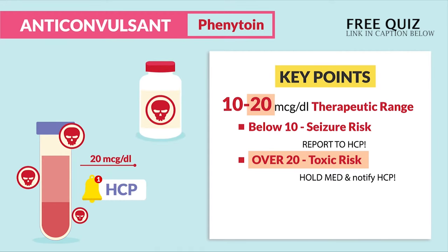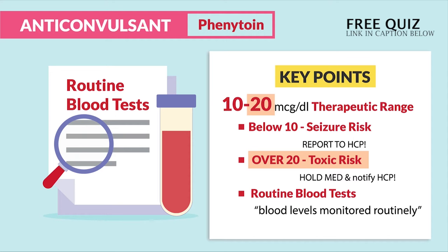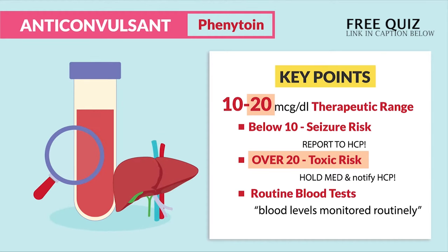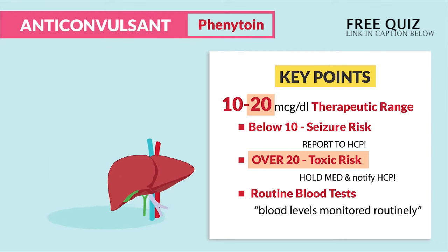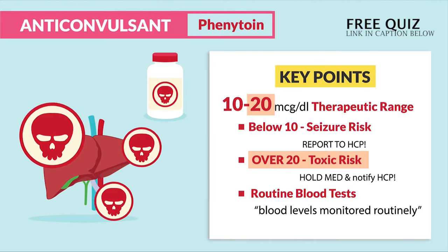Like any toxic drug, we do routine blood tests. Question banks love to ask whether blood levels are monitored routinely — and that's usually the correct answer. We do this to check the therapeutic range of the drug, as well as to monitor liver function, since any drug that can cause toxicity can also affect the liver heavily.